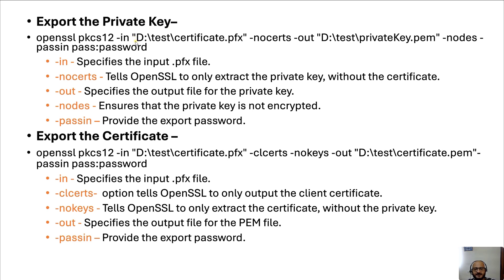The command is: openssl pkcs12 — PKCS12 is the format. -in specifies the PFX file we exported earlier. -nocerts means we are telling OpenSSL we only want to extract the private key, not the certificate. -out is the path where we store the private key in .pem format. -nodes ensures the private key is not encrypted, and -passin provides the export password we set earlier.